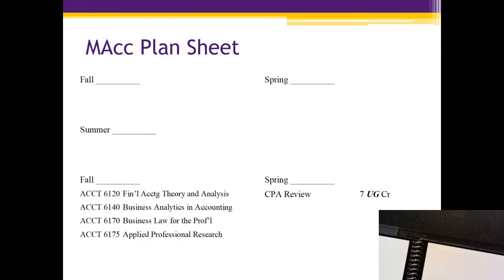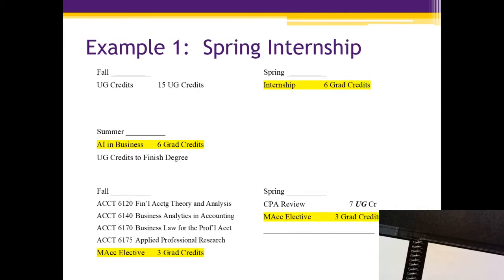Regarding plan sheets: the four core classes are always taken together and only offered in the fall. In the spring you'll take your CPA review — undergraduate credits that don't count toward your 18 elective hours. Most MAC students do take CPA review here. Our master's students have an extremely high pass rate — about 90% first time, and the last data we had was 94% for students who did their undergrad here and the MAC. Those who didn't pass on the first try typically had one section to retake.